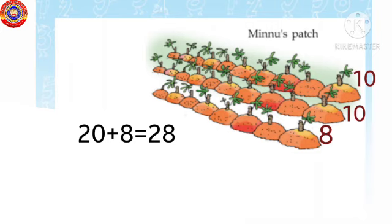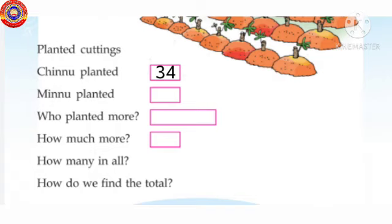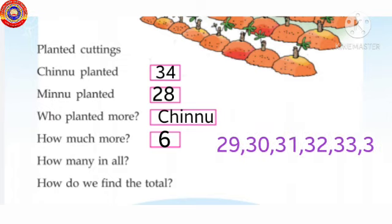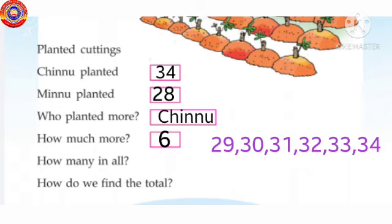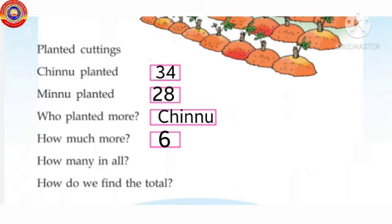Chinu planted 34 plants and Minu planted 28 plants. From this, who planted more? Yes, 34 is the biggest number, so Chinu planted more. How much more? Yes, 6 more. That is from 28 to 34: 28, after 29, 30, 31, 32, 33, 34. Six numbers are there, so 6 more.